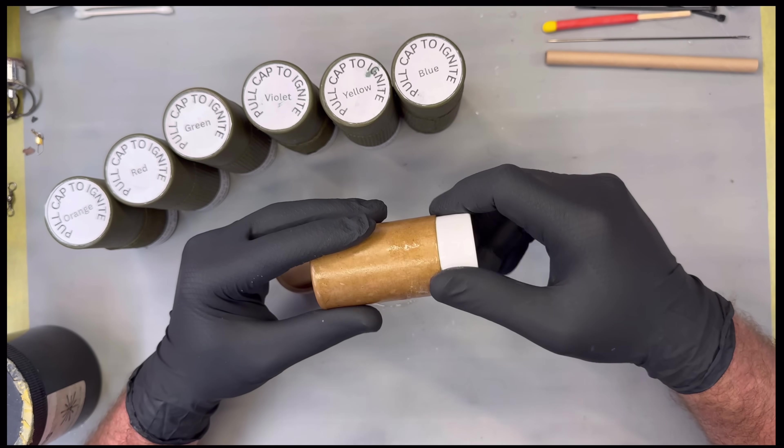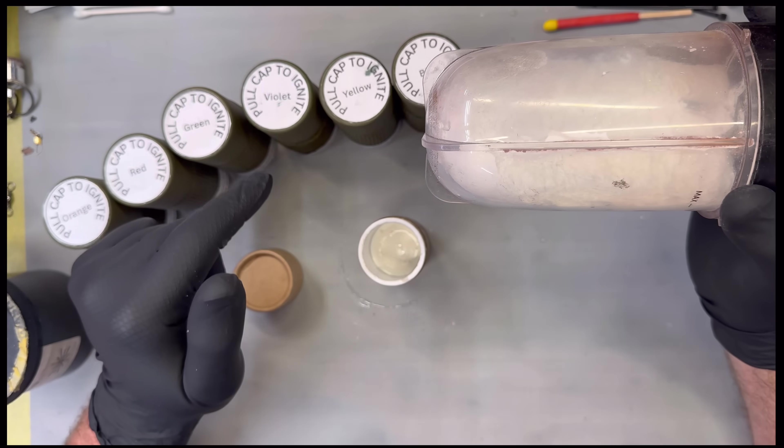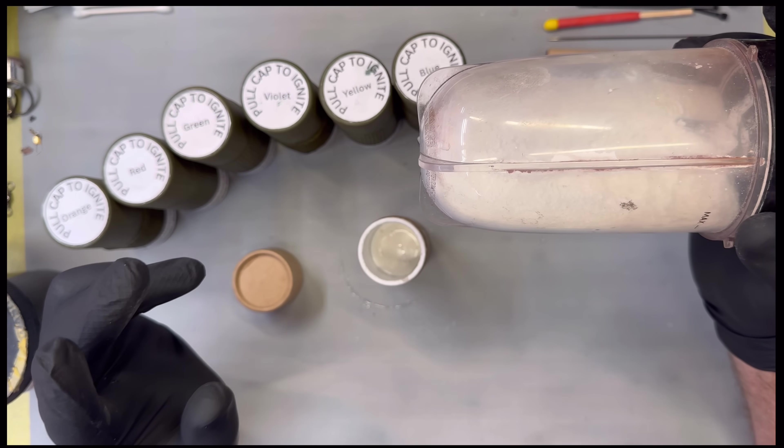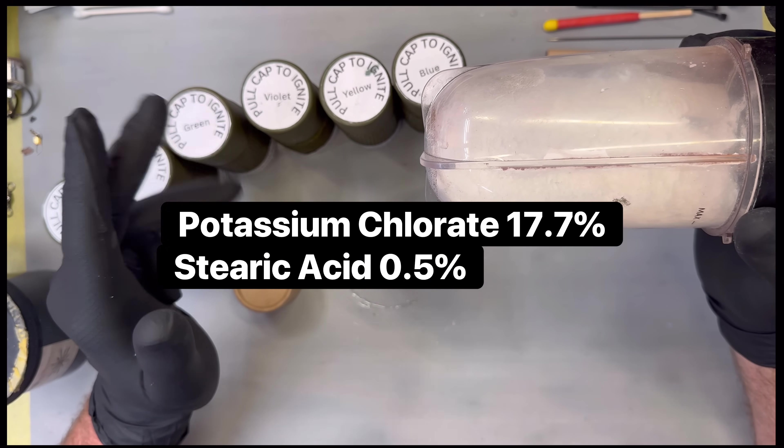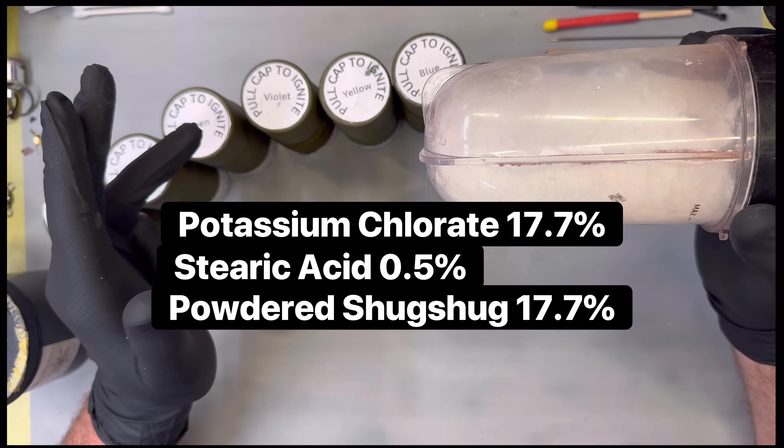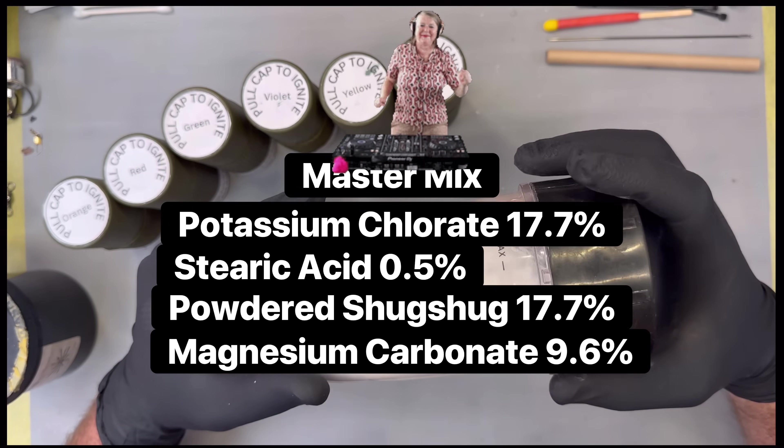Here's a cool tip for the composition mixing. You can mix the potassium chlorate, stearic acid, sugar, and magnesium carbonate as a kind of a master mix, and then just add the colors that you want or the white or the TPA accordingly.